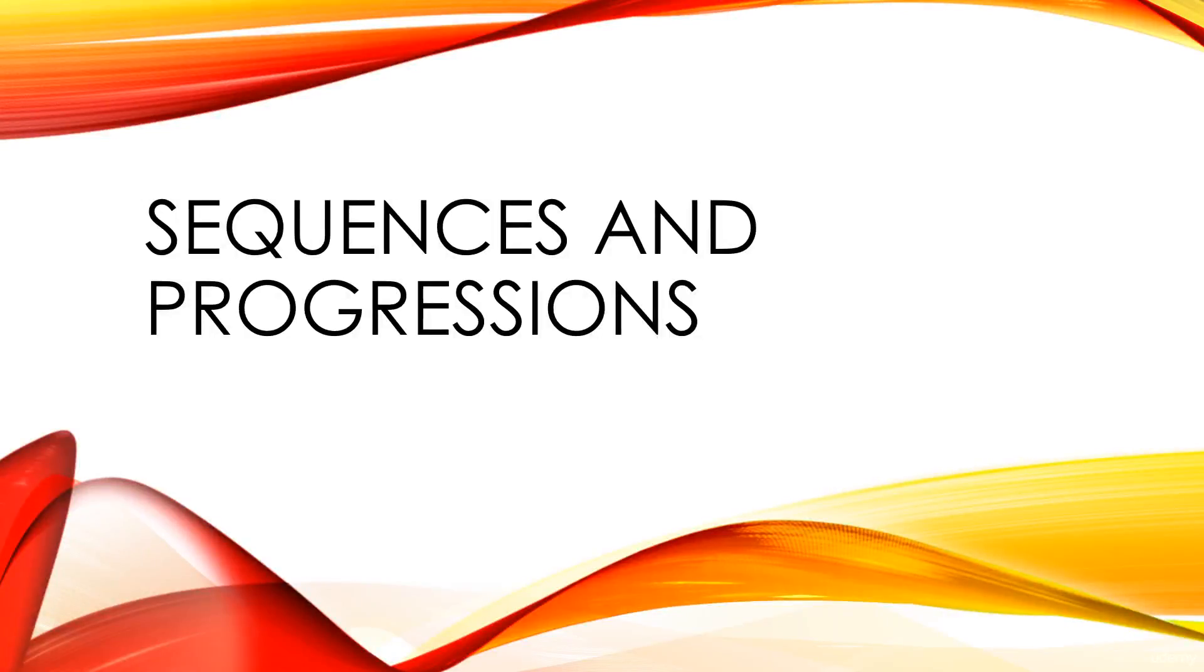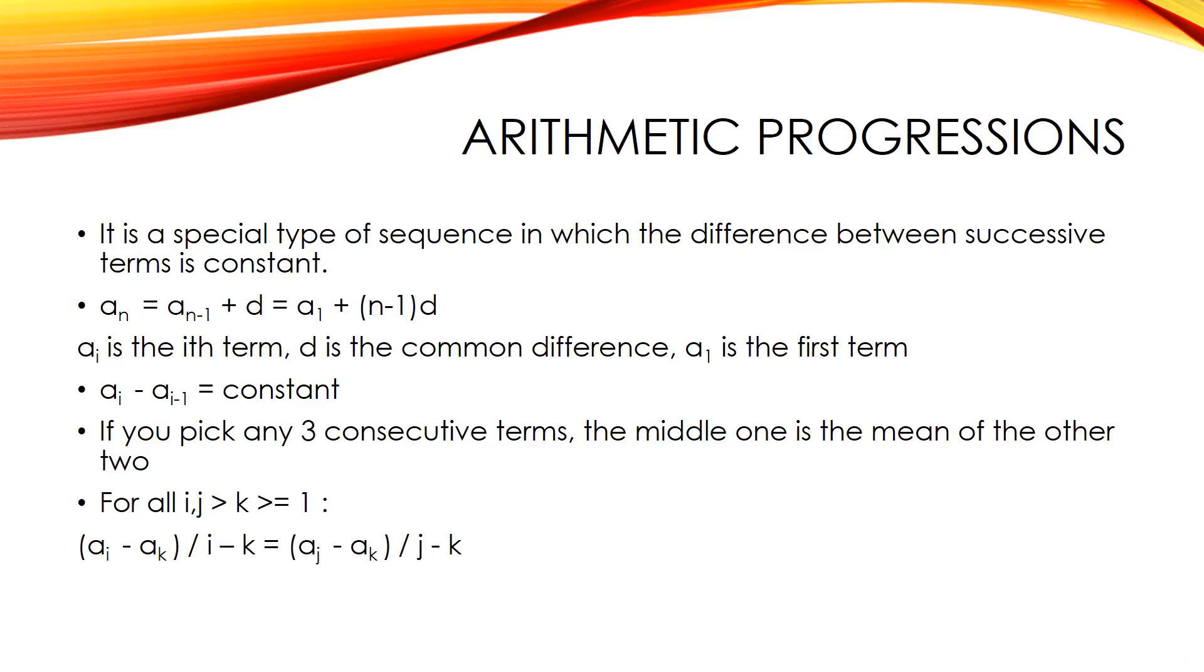Sequences and progressions. A sequence is an ordered list of objects. It can be finite or infinite. The elements may repeat themselves more than once in the sequence and their ordering is important unlike a set.